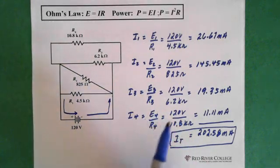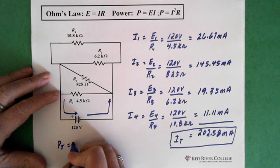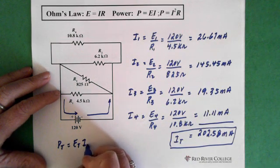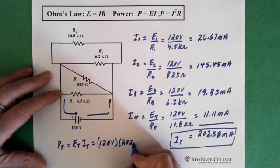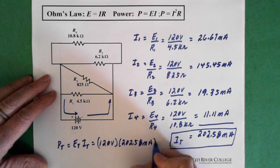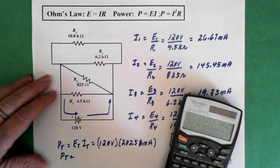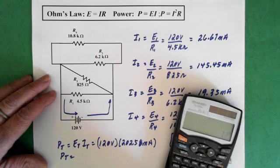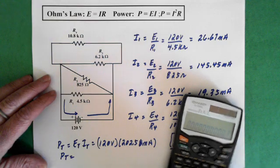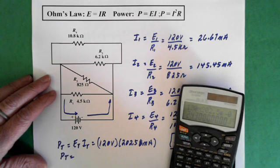Now I'm not going to solve for total power, but you can if you want using these formulas. And the power total we know equals E total times I total. Let's just do that piece. So that's our 120 volts times our 202.58 milliamps.